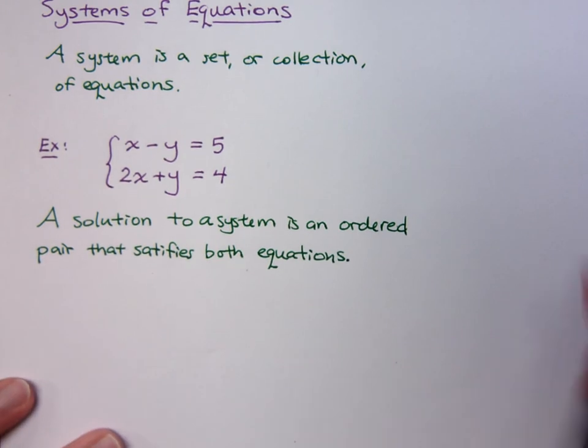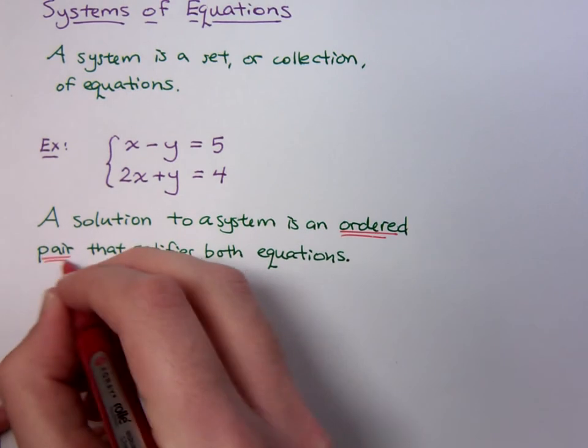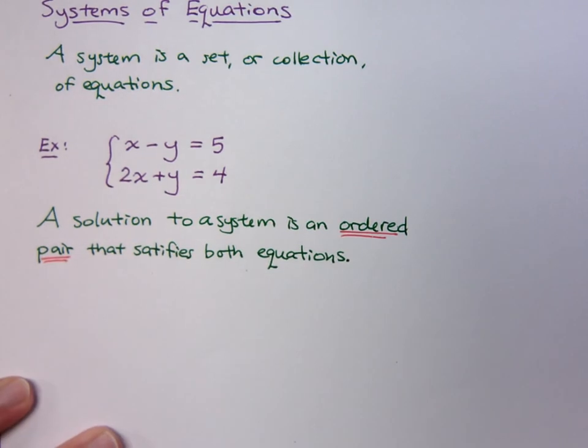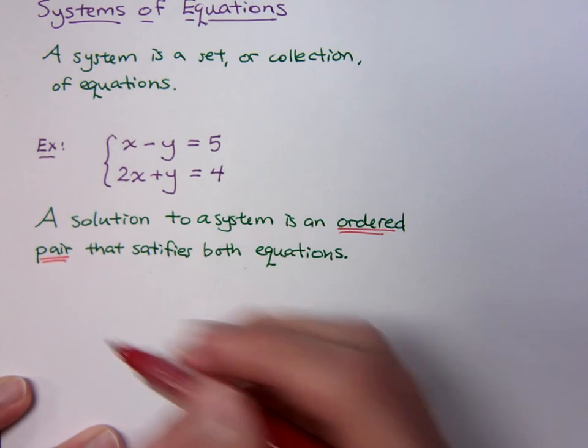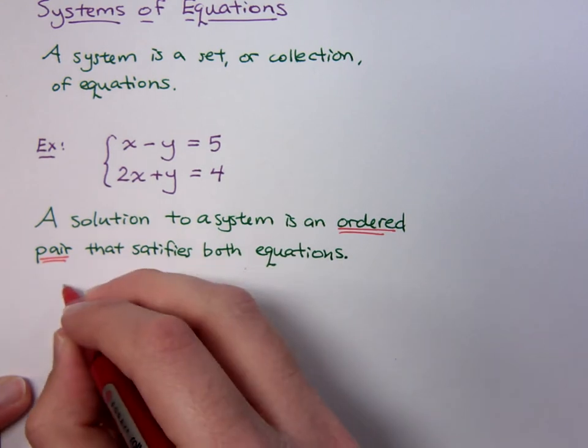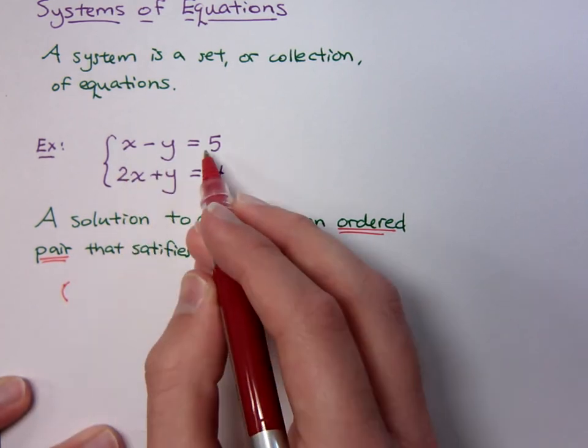When we talk about an ordered pair, remember we're talking about x, y point coordinates. So for example, if I look here, if I look at x minus y equals 5,